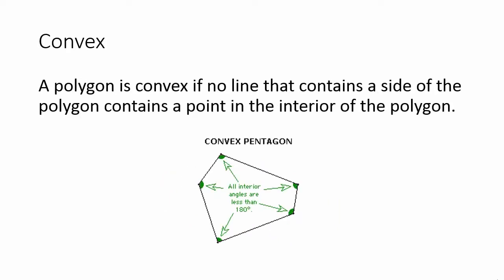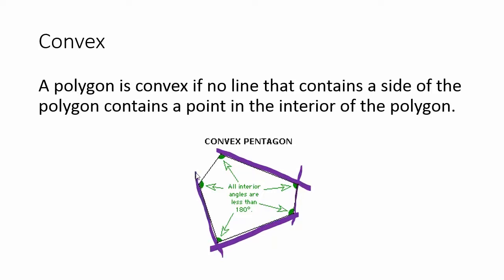Convex: a polygon is convex if no line that contains a side of the polygon contains a point in the interior of the polygon. The way I remember this is if I were to extend the sides of the polygon, I can see that none of the sides go through the inside of the polygon — they all are on the outside. That's how I know that this is a convex polygon.